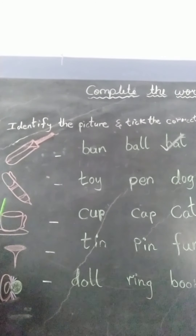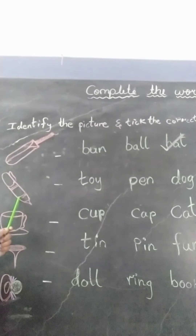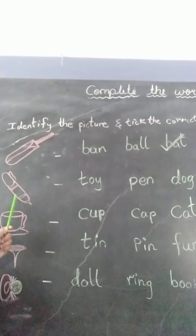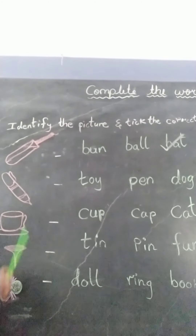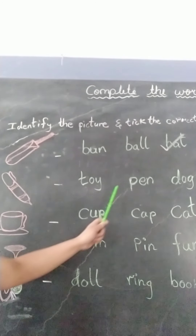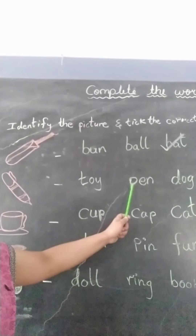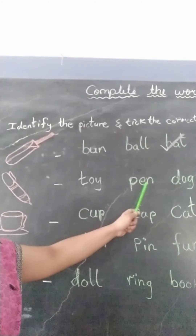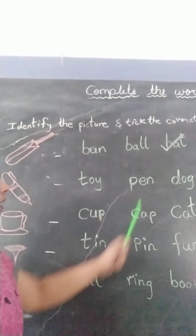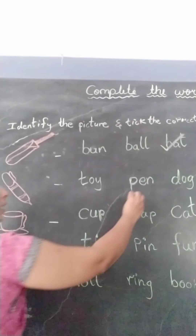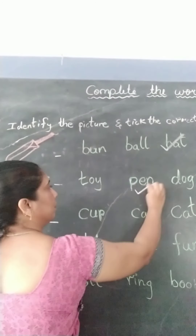So children, let us see the spelling of pen. The spelling of pen is P-E-N, pen. So here is P-E-N, pen. So tick it.